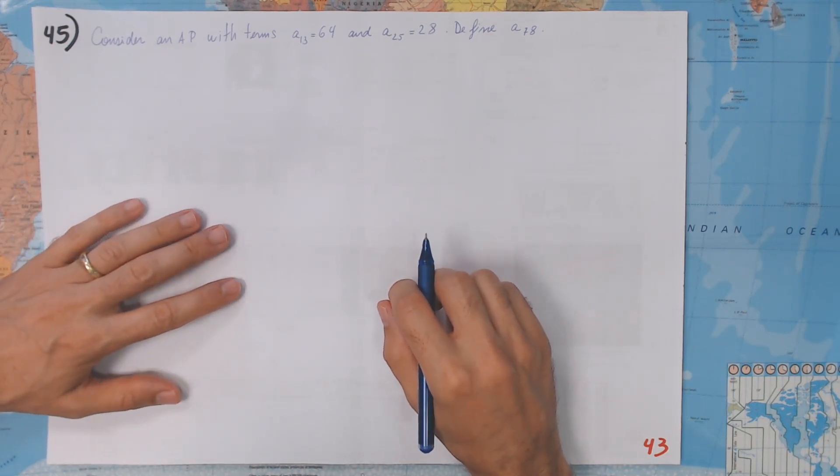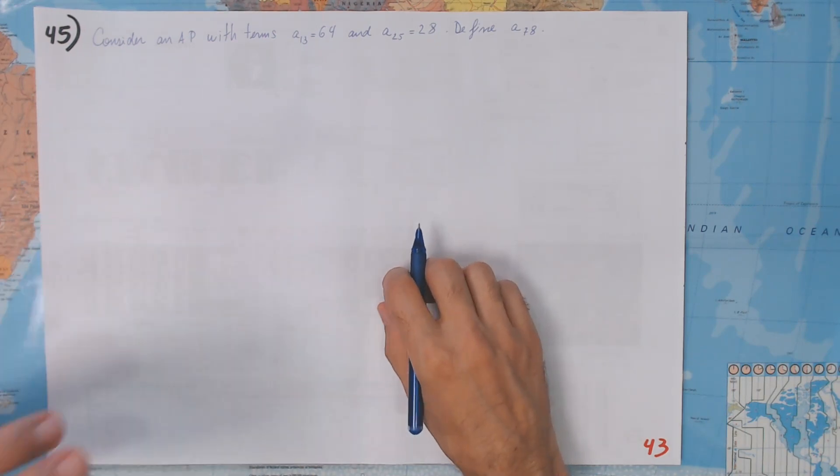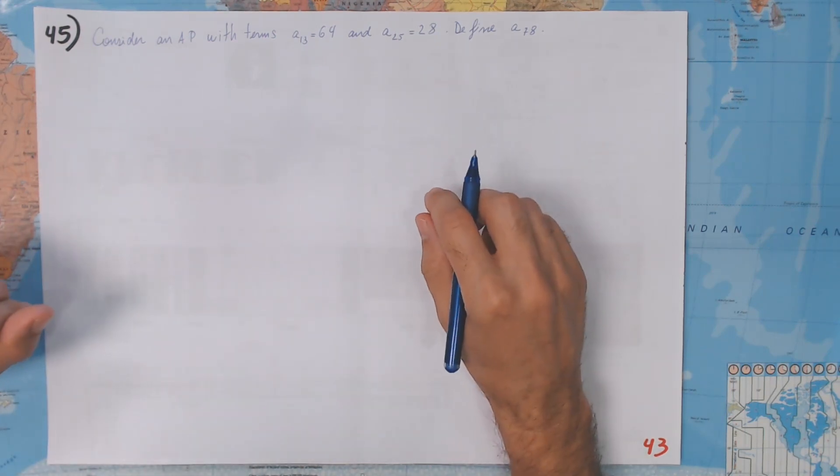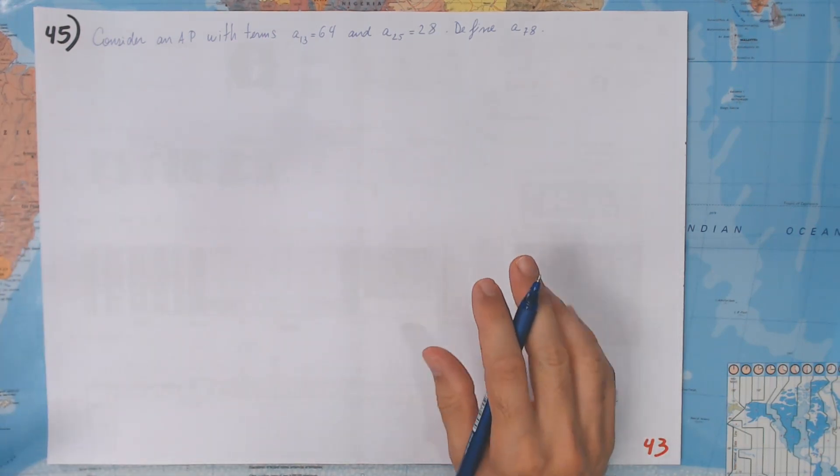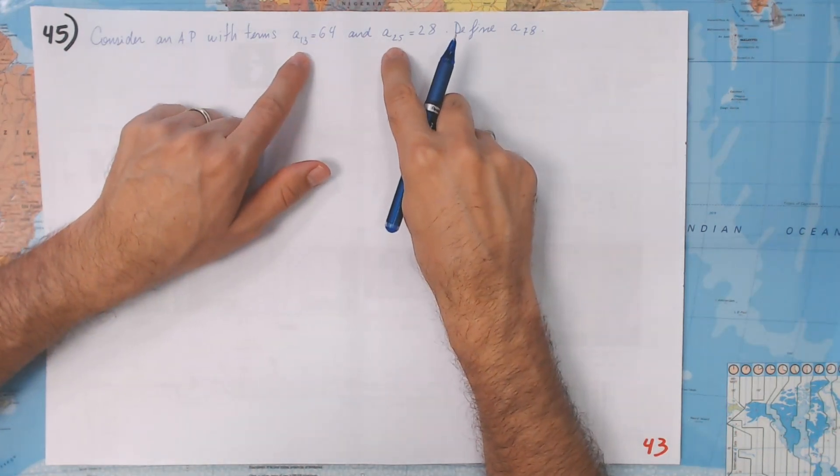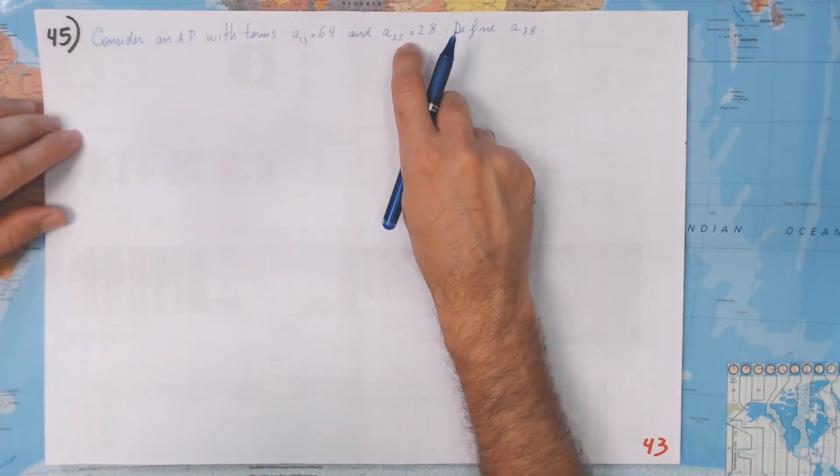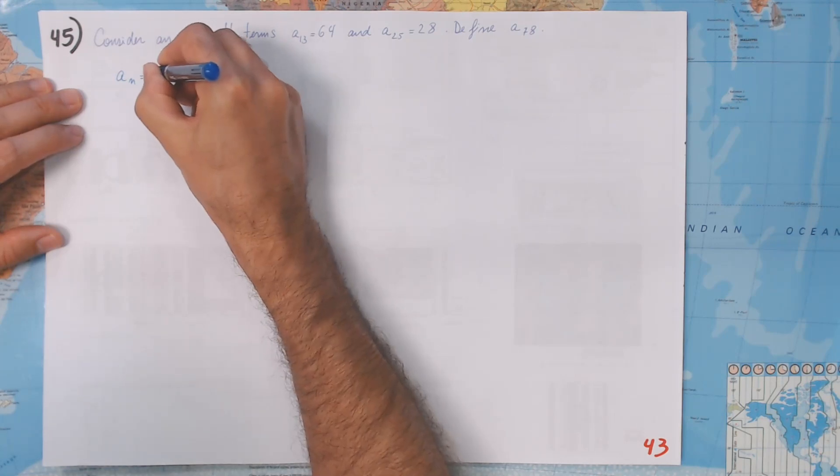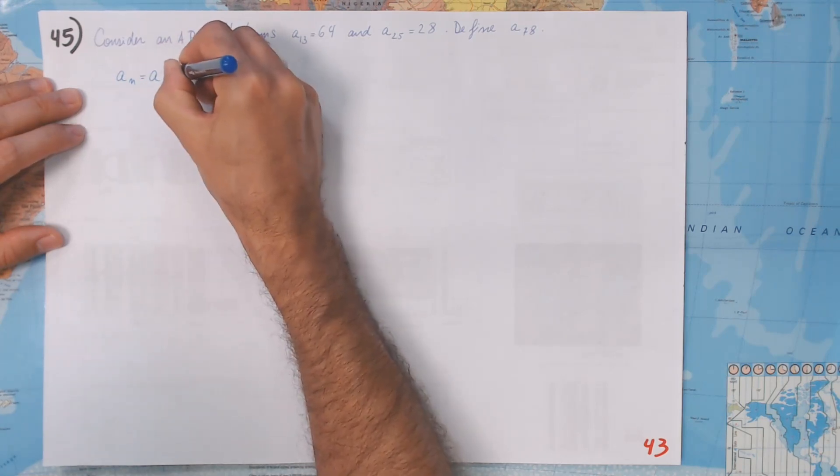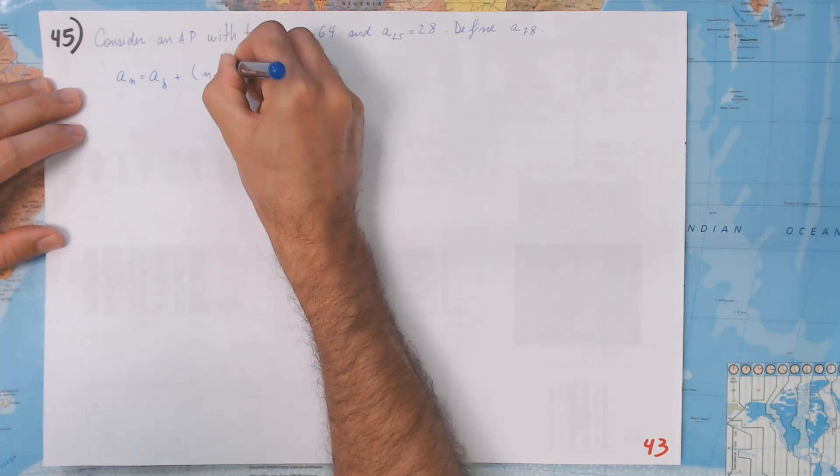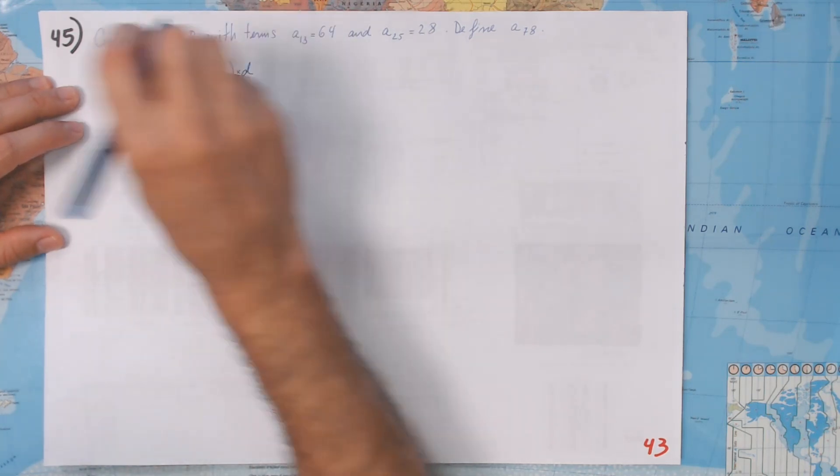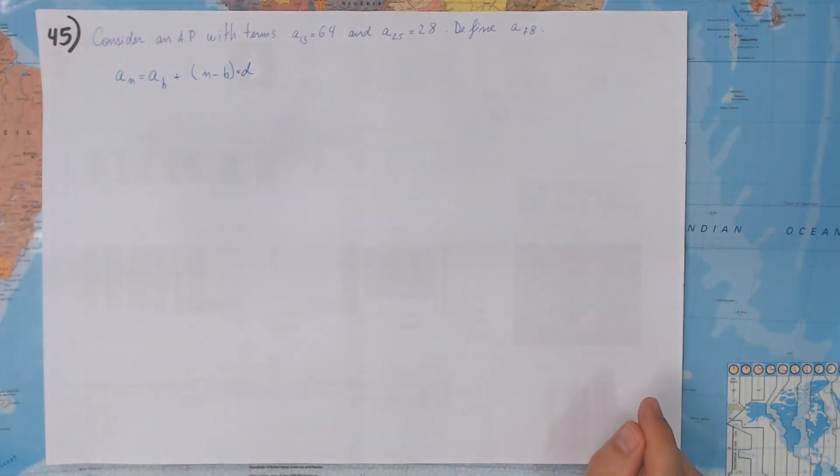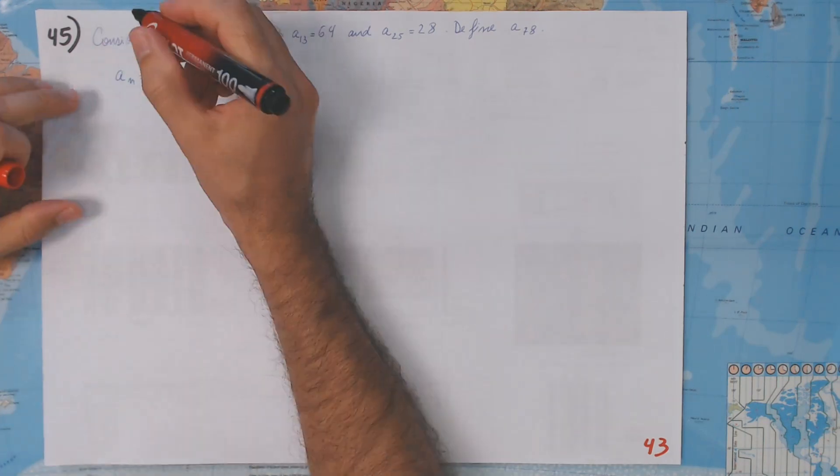I'm going to give you a tip. What is the general idea here? We have two terms. With those, what can we get? We can get D, right? Remember, once we have aₙ it is a_b plus n minus b times D. That one is very important and that is the one we're going to use here.